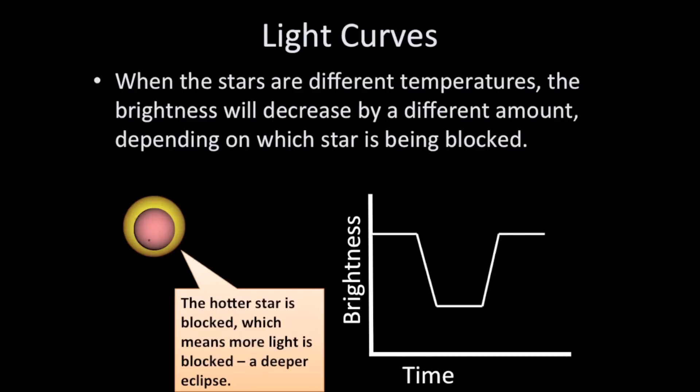But what about the effect of temperature? Well, when you block out a hot surface, you're blocking out more light than when you block out a cooler surface. And so for main sequence stars, it's necessary to know whether you're talking about a more massive star or a lower mass star. In this case, I have two main sequence stars.